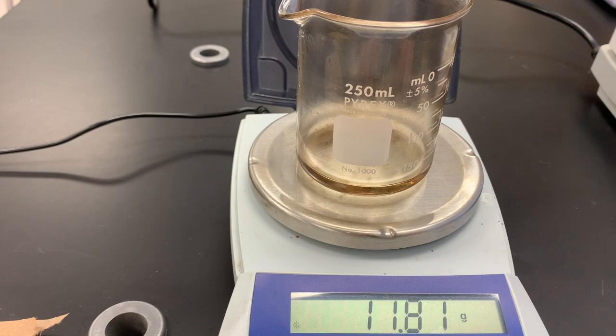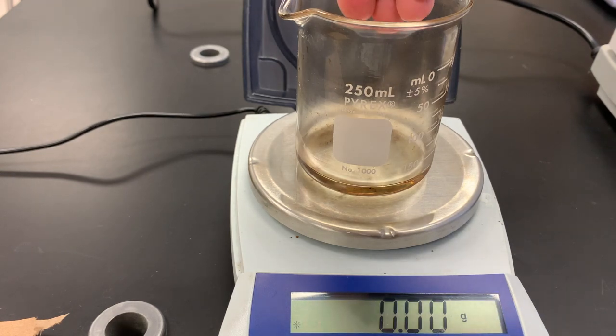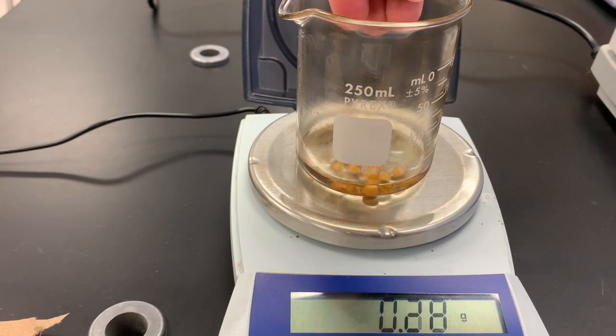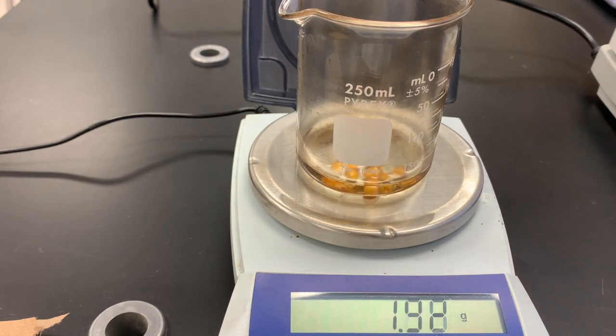Next I'm going to zero it again and I'm going to put in 10 popcorn kernels, so I've already counted these out. We're going to put these in and get the mass of just the popcorn kernels. Okay, so now record this one as well. We need each individual measurement and then we're going to add all of them up to get the total measurement as well.